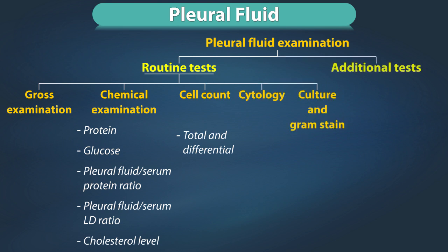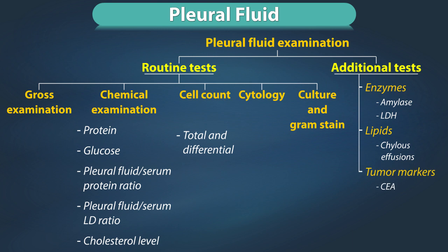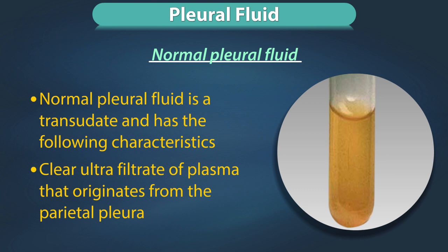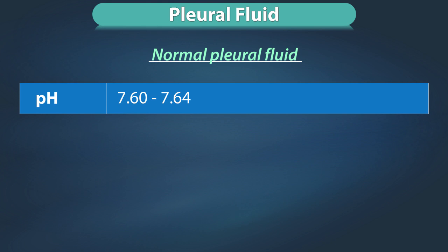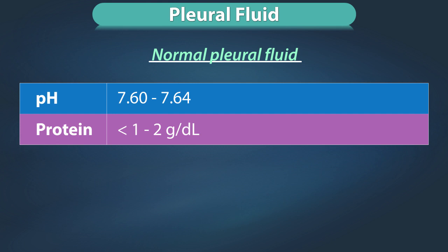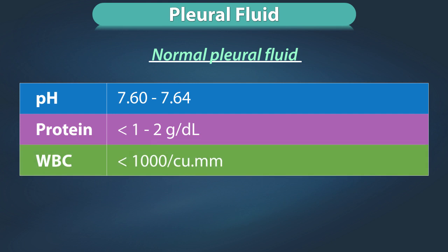Additional tests can include enzymes like amylase and lactate dehydrogenase, lipid measurement for chylous effusion, tumor markers like CEA as found in metastatic lung or breast carcinoma, immunological studies like rheumatoid arthritis factor, anti-nuclear antibody factor, and complement levels. Normal pleural fluid is a transudate: a clear ultrafiltrate of plasma originating from parietal pleura, with a pH of 7.60 to 7.64, and protein content of less than 1 to 2 grams per deciliter, fewer than 1000 white blood cells per cubic millimeter.